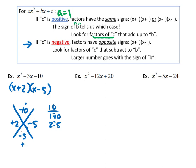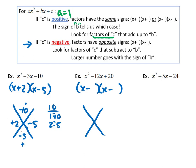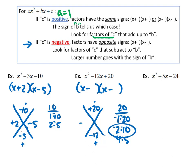For x squared minus 12x plus 20: it's x and x. The product is positive 20, so the signs are the same. Since they add to negative 12, both must be negative. Factor pairs of 20: 1 and 20, 2 and 10, 4 and 5. With both negative, the pair that adds to negative 12 is negative 2 and negative 10. It doesn't matter which order you put them in since they're both negative.